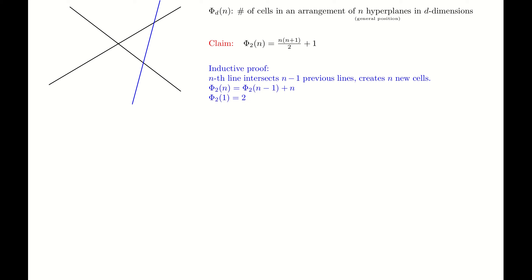The proof is using induction. We can easily verify this for n=1: we have two regions — above the line and below the line — so the equality holds. For n greater than 1, assume it holds for n-1 lines. The nth line intersects all the previous lines because we assume general position, giving n-1 intersections. These n-1 intersections create n new cells. In the picture, two intersections create three new cells. So the number of regions created by n lines equals the number created by n-1 lines plus n. Working out this recursion with the base case confirms the claim.